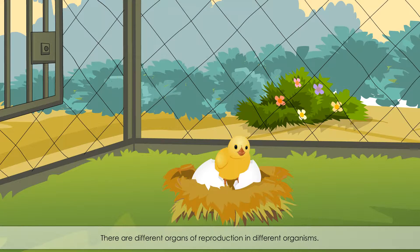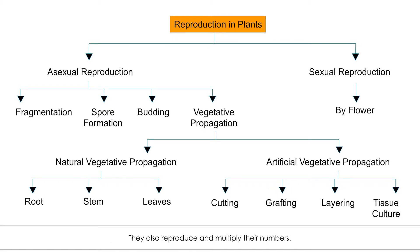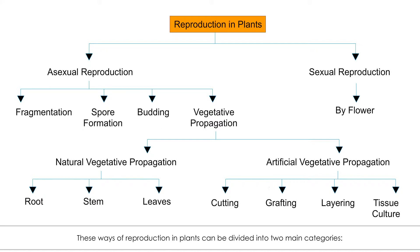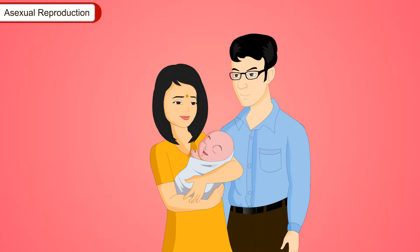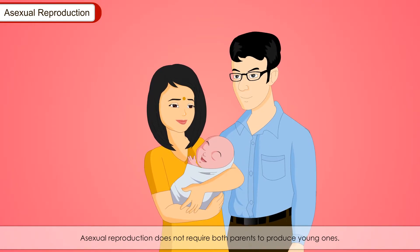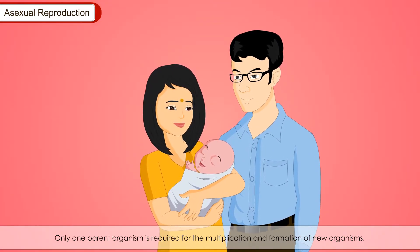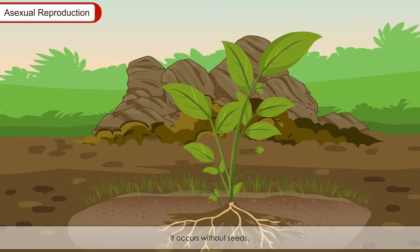There are different organs of reproduction in different organisms. Flower is the reproductive organ in plants. But there are many other plants which do not have flowers — they also reproduce and multiply their numbers. Plants reproduce by several ways to produce their offsprings. These ways of reproduction in plants can be divided into two main categories: Asexual Reproduction and Sexual Reproduction. Asexual reproduction does not require both parents to produce young ones.